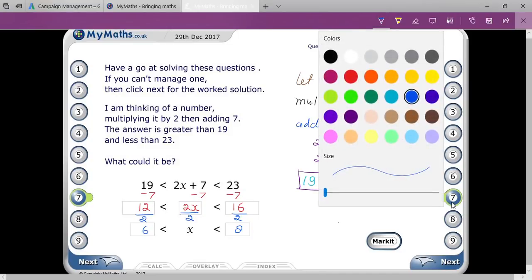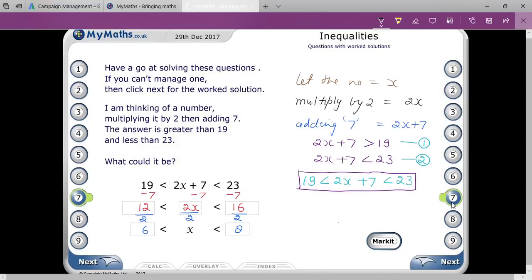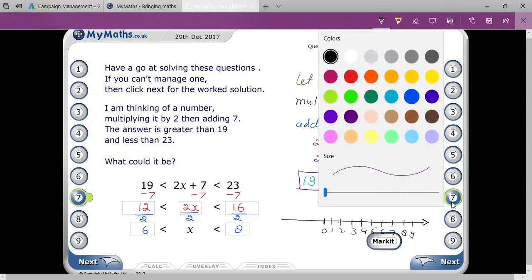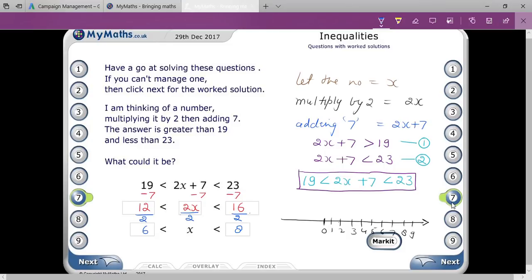So if you want to represent that on a number line, firstly draw the number line, and then you have to mention 0, 1, 2, 3, 4, 5, 6, 7, 8, 9, and then onwards. Here you can see that your interval is 6 and 8. So first of all, you have to mention 6, that is here.